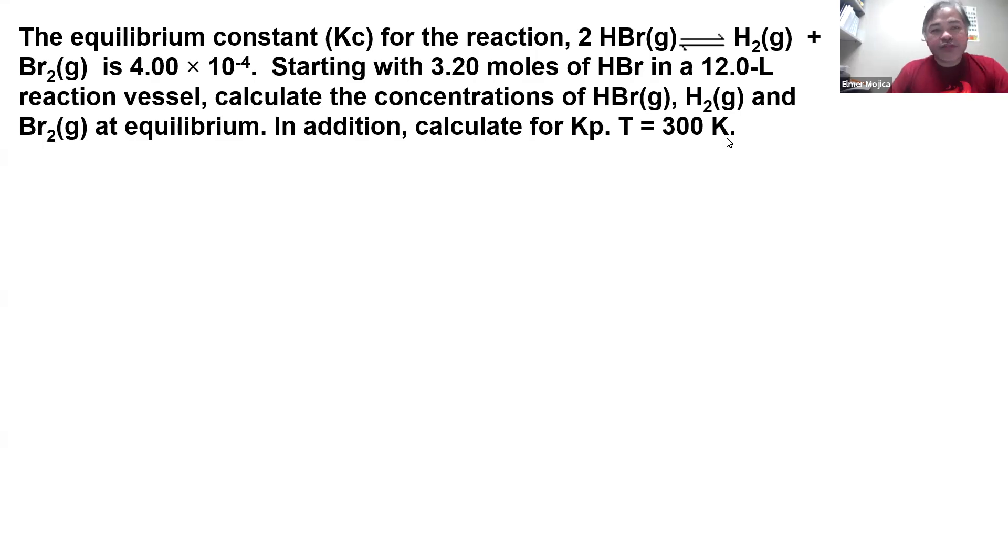For this problem, you have a reaction 2 HBr producing H2 and Br2, and the Kc is 4.0 times 10^-4. Starting with 3.2 moles of HBr in a 12-liter reaction vessel, we have to calculate the concentrations of HBr, H2, and Br2 at equilibrium. In addition, calculate Kp at T = 300 K.